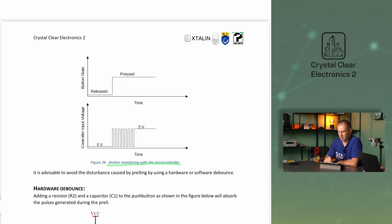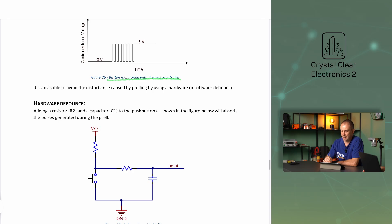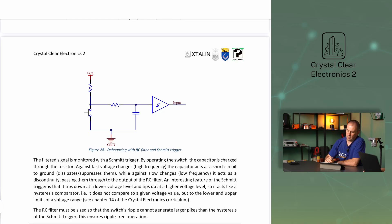It is advisable to avoid the disturbance caused by prelling by using a hardware or software debounce. Adding a resistor R2 and a capacitor C1 to the push button, as shown in this figure, will absorb the pulses generated during the prel. A really nice solution is to add the RC circuit to the Schmitt trigger. The STM32 microcontroller we are using has a built-in Schmitt trigger, as explained in the input mode section. If a controller does not include a Schmitt trigger, it should be incorporated into the circuit as an external discrete component.